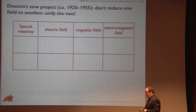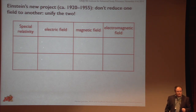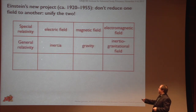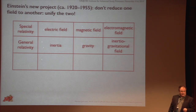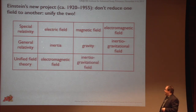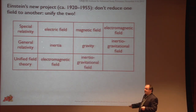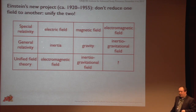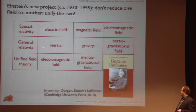So Einstein comes up with a new project at this point, and this is where I'm going to end. One way of looking at the special theory of relativity is that it unifies the electric and magnetic field into one electromagnetic field — not done by Maxwell, not by Lorentz, but by Einstein. General relativity is unifying inertia and gravity into what we now call the inertial-gravitational field. So the obvious thing to do next is a unified field theory in which you try to unify the electromagnetic field and the inertial-gravitational field. Of course, I don't know what's in that box. If you want to find out how Einstein tried to do this, I recommend that you read Jeroen van Dongen's book. Thank you.